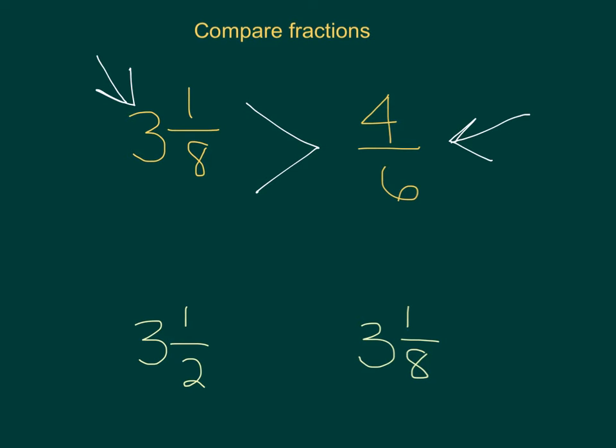Now for the next example, you can't look at it that way because they both have a 3. So then we need to compare our 1 half and our 1 eighth. So we need to get a common denominator. So my multiples for 2 are 2, 4, 6, and 8. Well we see that we have an 8 in common. So I'm going to make this denominator an 8. To make it an 8, I have to multiply it by 4. So I'm going to multiply the top by 4 and get 4 eighths.